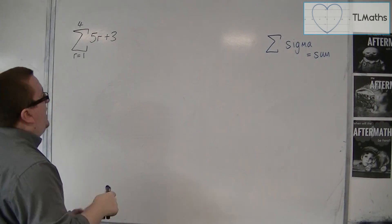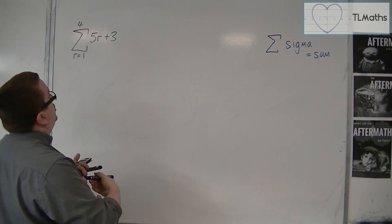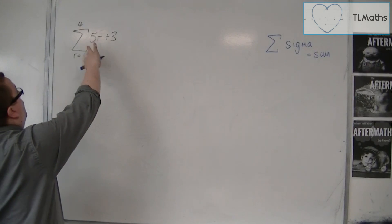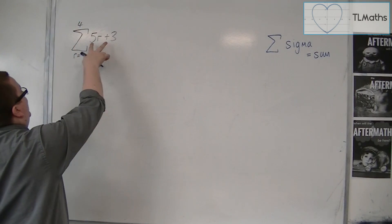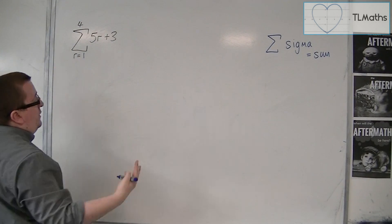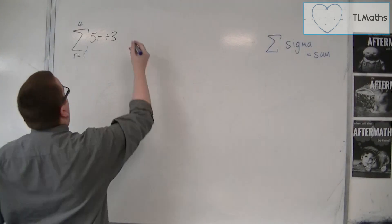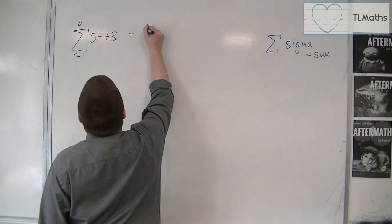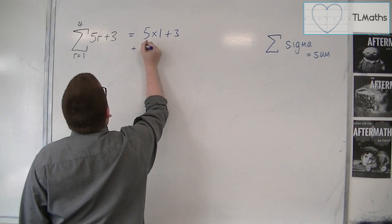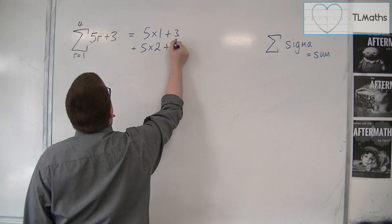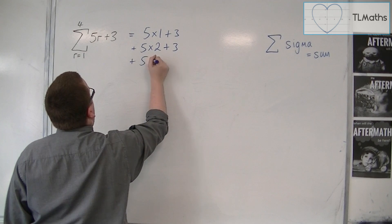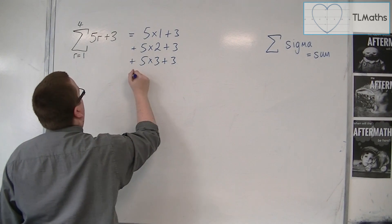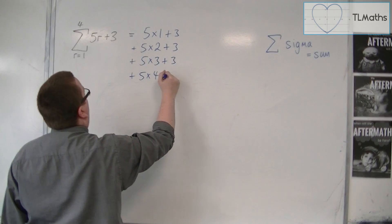So this is telling me to substitute in the whole numbers from r is 1 up to 4 into that, and then add all the results together. So we would have 5 times 1 plus 3, plus 5 times 2 plus 3, plus 5 times 3 plus 3, plus 5 times 4 plus 3.